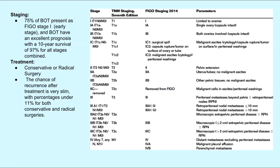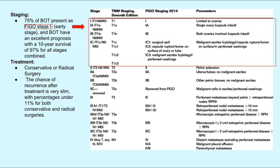A large majority of BOTs are confined to the ovaries and are staged as FIGO stage 1, typically with a good prognosis including a 10-year survival rate of 97%. We have included the entire staging chart as reference.